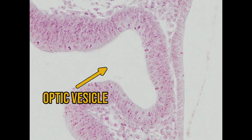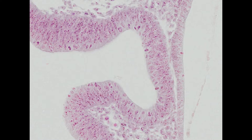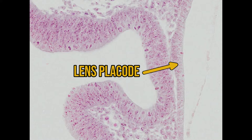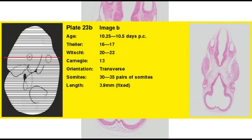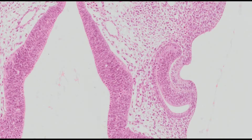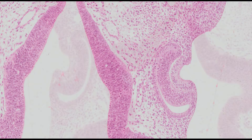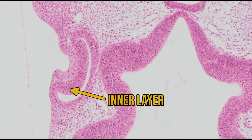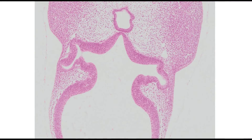Zooming in, we can see the optic vesicle has grown through the mesoderm and is contacting the surface ectoderm. This area of ectoderm is called the lens placode and will end up inside the eye forming the lens. Just half a day later at 10.5 days of gestation, the contact between ectoderm and neural ectoderm has stimulated the lens placode to fold into the optic vesicle. The optic vesicle becomes cup-shaped with the lens pit and a chunk of mesoderm forming the contents — this is called the optic cup. There are now two layers: an inner layer and an outer layer, and the optic cup is still connected to the telencephalic vesicle via the optic stalk.